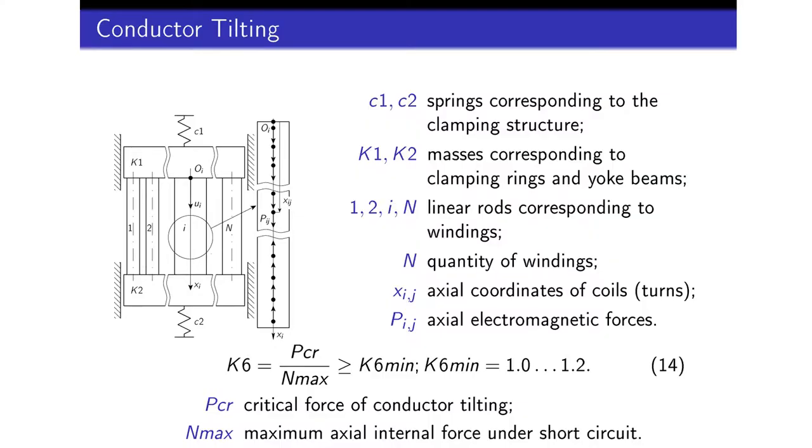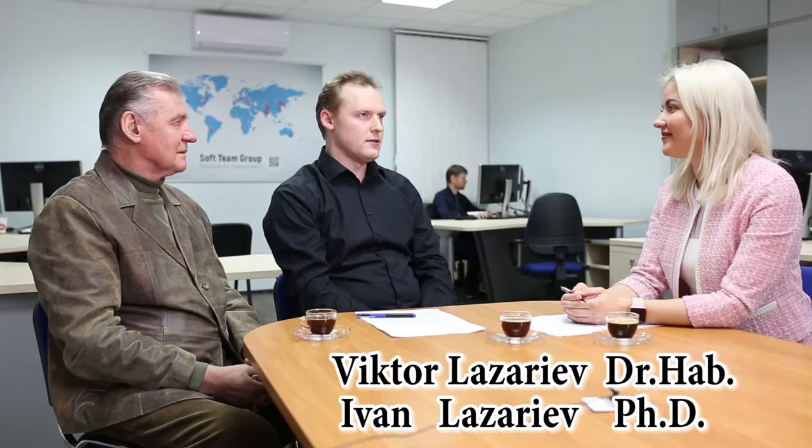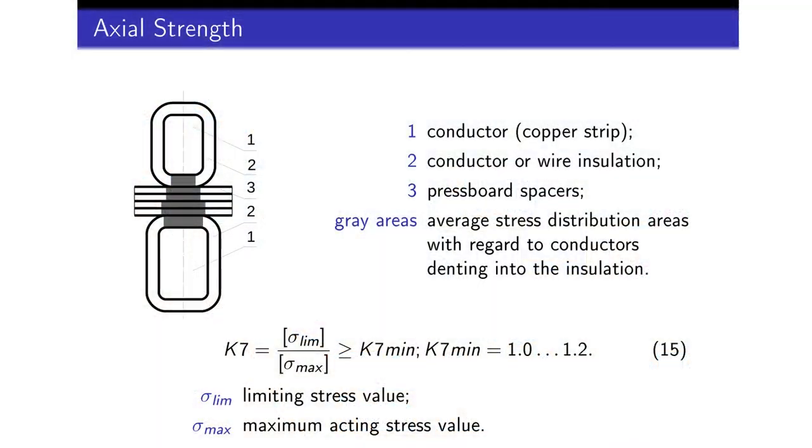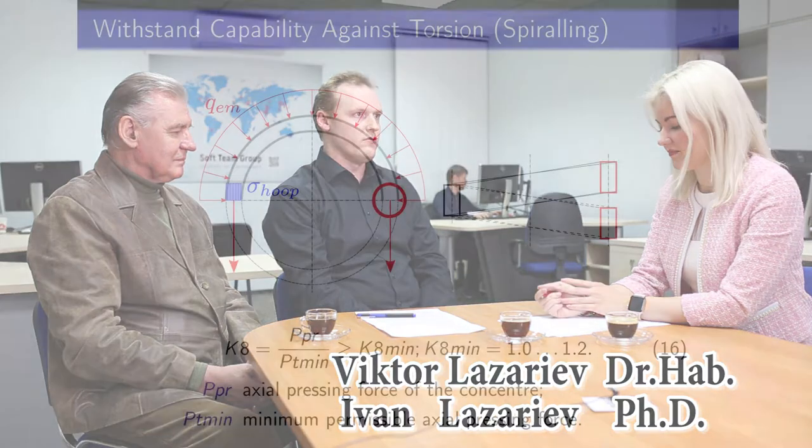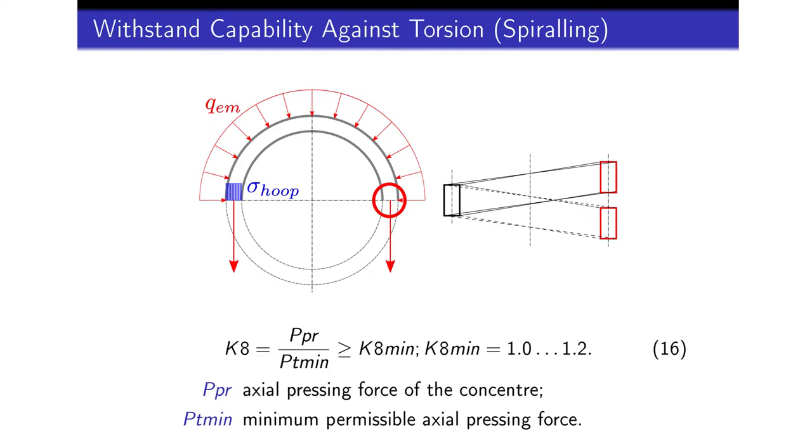Thus we go by the limiting bearing capacity of the winding conductor, and that is how we check the conductor strength in bending by electromagnetic short circuit forces. The criteria of tilting withstand capability and winding element strength under axial load are similar to those in the informative Annex A, the difference being that the acting forces and stresses come from a dynamic calculation of windings axial vibrations with regard to the inertia of the moving masses, such as winding discs or turns, coil clamping rings, and yoke beams. The criterion of windings withstand capability against torsion, also known as spiraling, also uses the results of the dynamic calculation of windings axial vibrations.